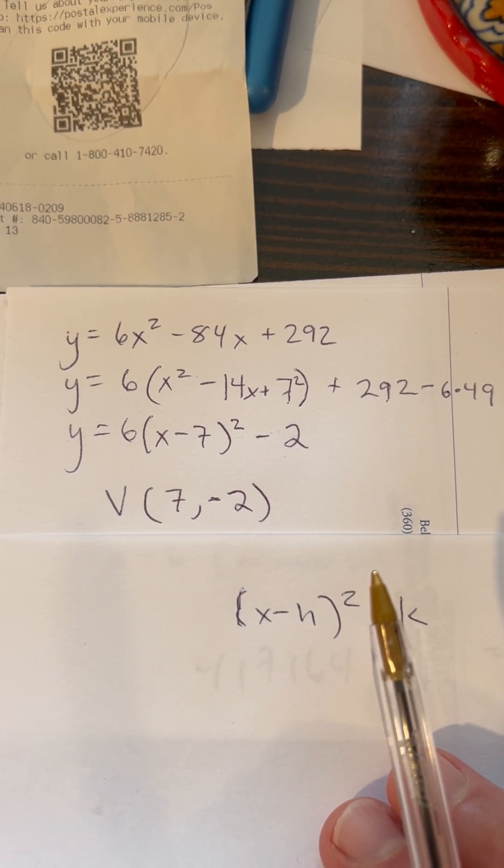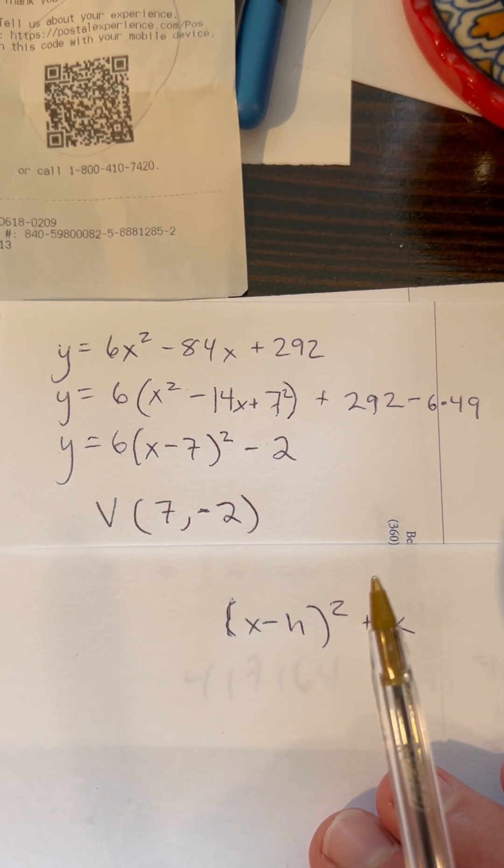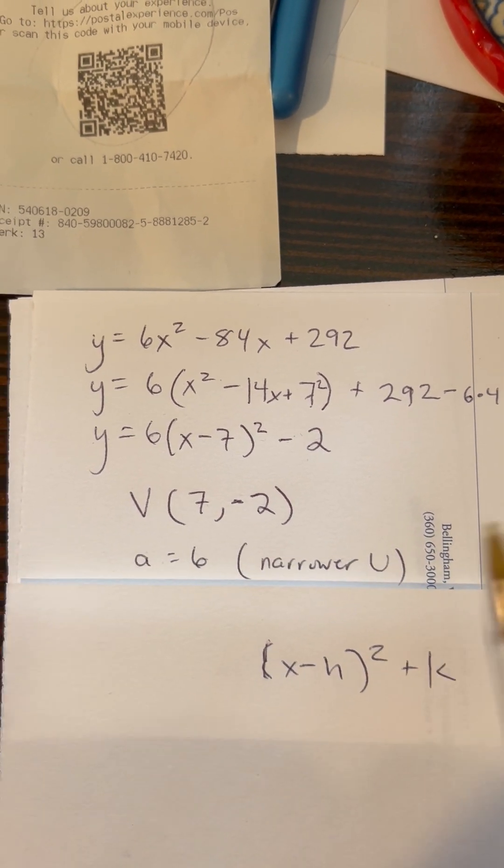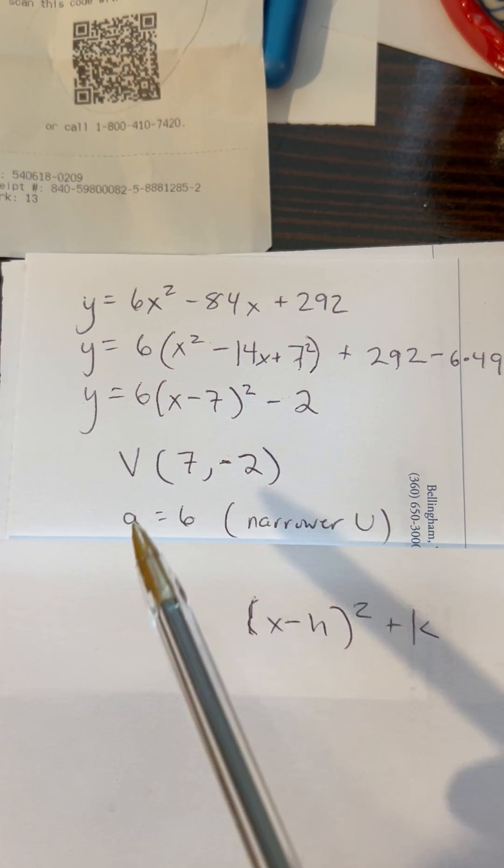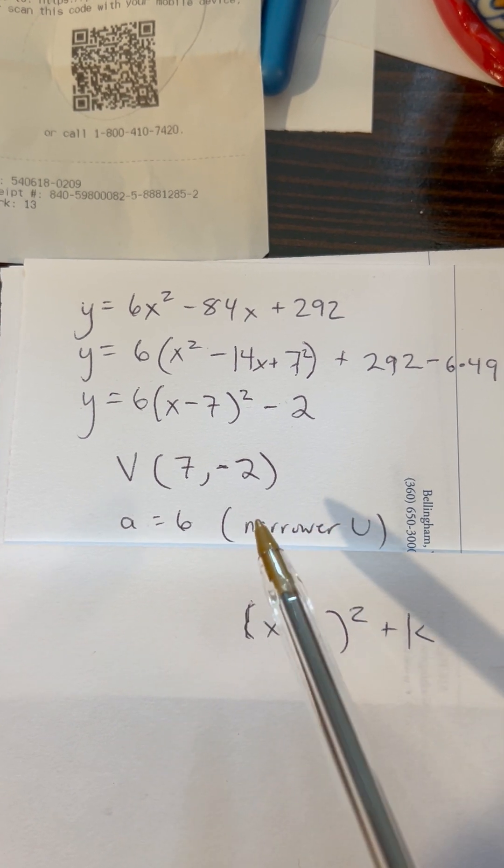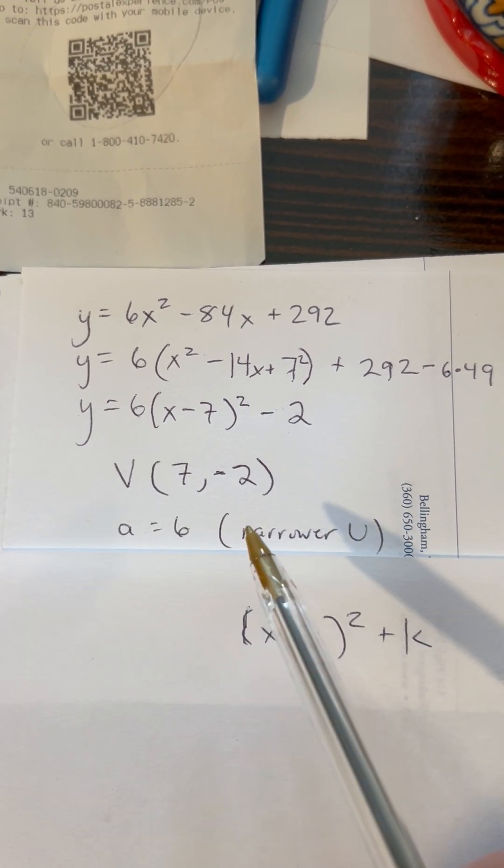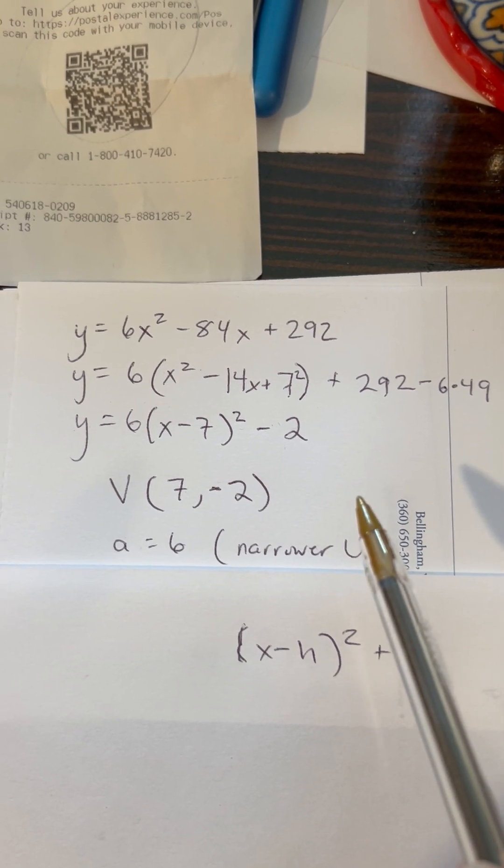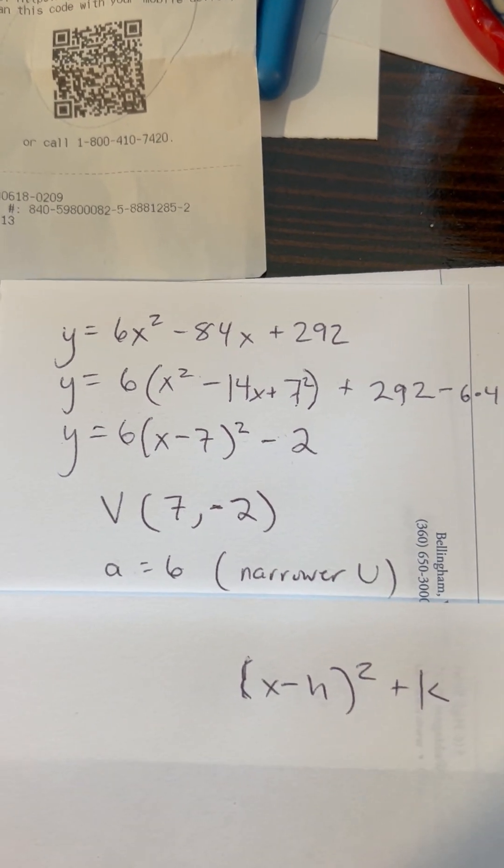And lo and behold, I know now that that's in vertex form. I've got a vertex at (7, -2). And a, this factor out here, is 6, which means that my parabola is going up. It's a positive number. And it's going to be a narrower parabola than my standard y = x² parabola. I hope that helps.